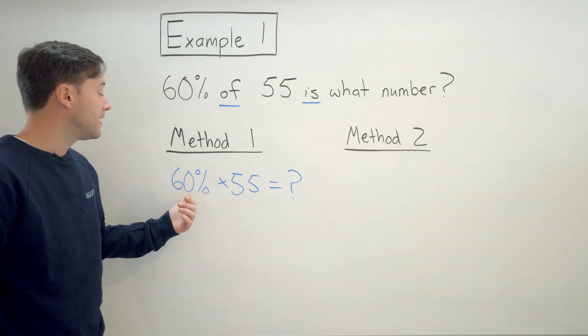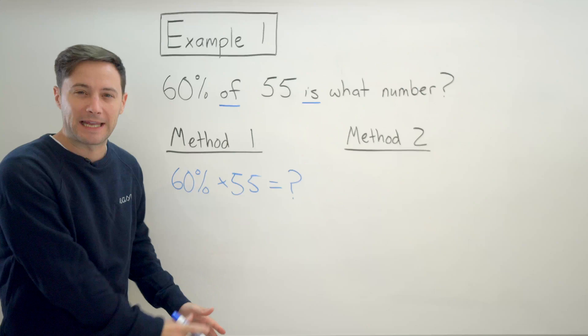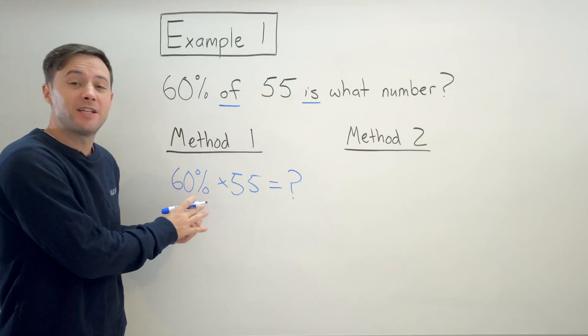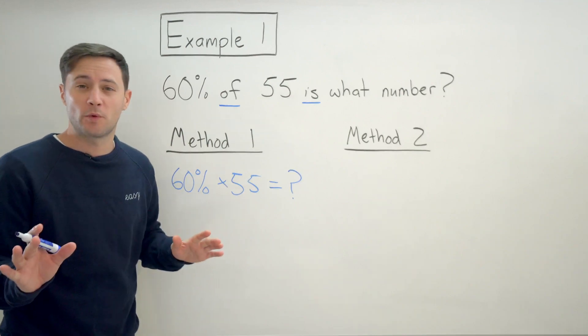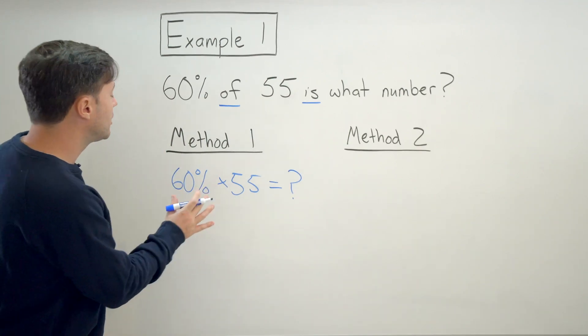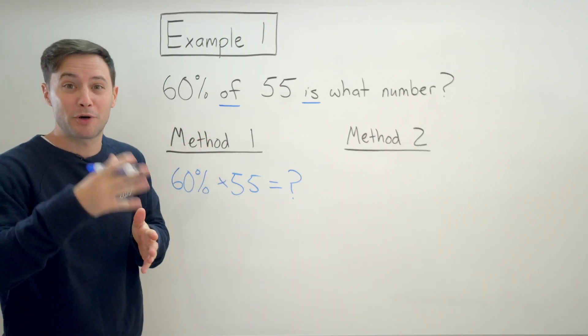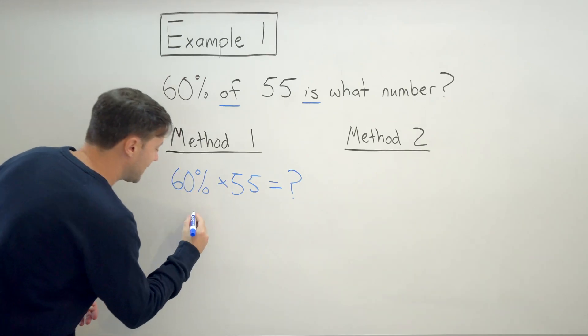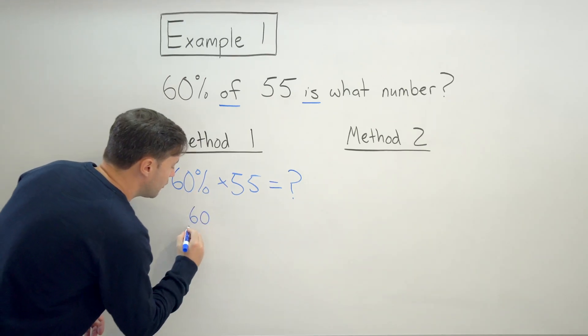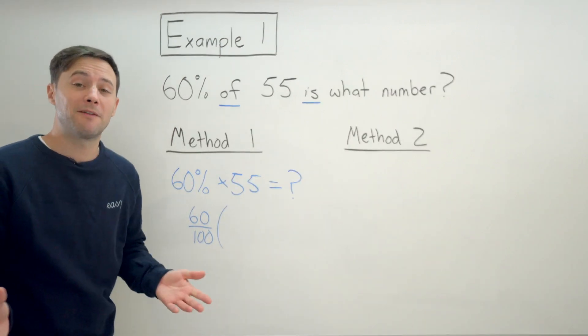Now what I'm going to do is if I'm going to multiply with a percent, I can't multiply it as a percent. I'm going to either have to change it into a fraction or a decimal. And right now the easiest way to do that is to change it into a fraction. So I know that 60%, 60 per cent, per cent literally means per 100.